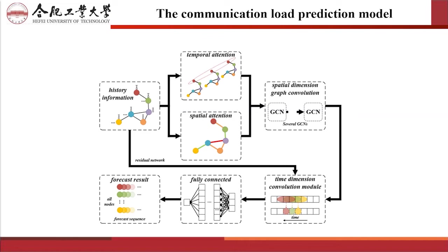The figure shows the overall framework of the EST-GCN module proposed in this paper. It is composed of five parts: time attention module, spatial attention module, spatial dimension graph convolutional module, time dimension convolutional module, and fully connected layer module.